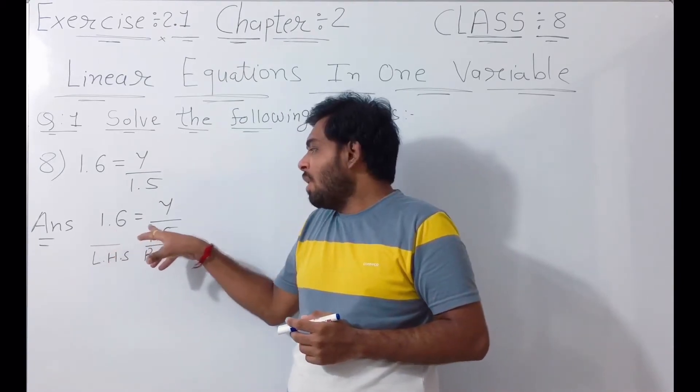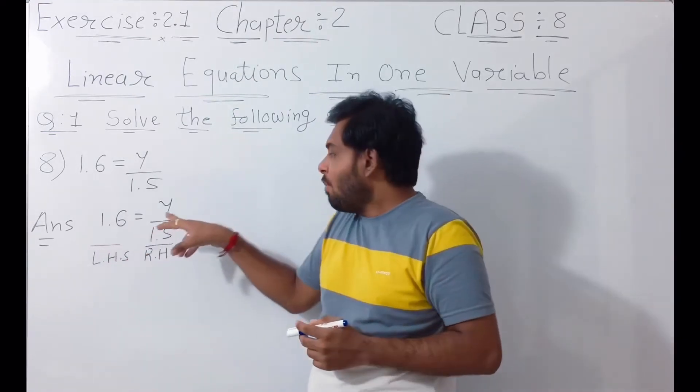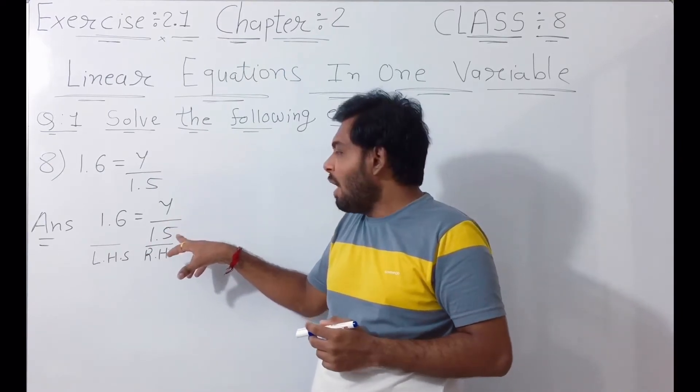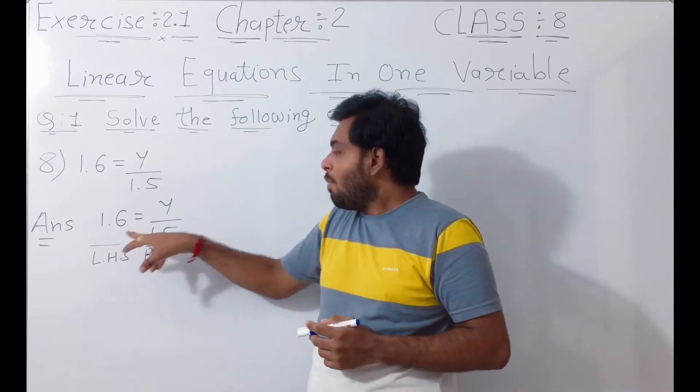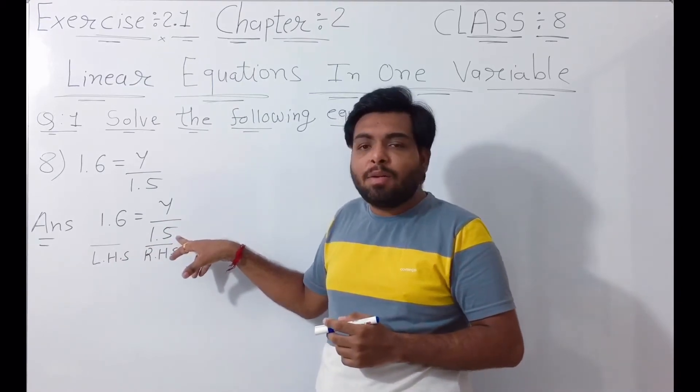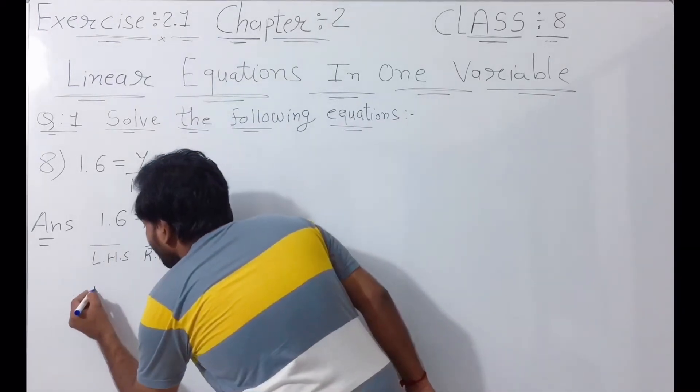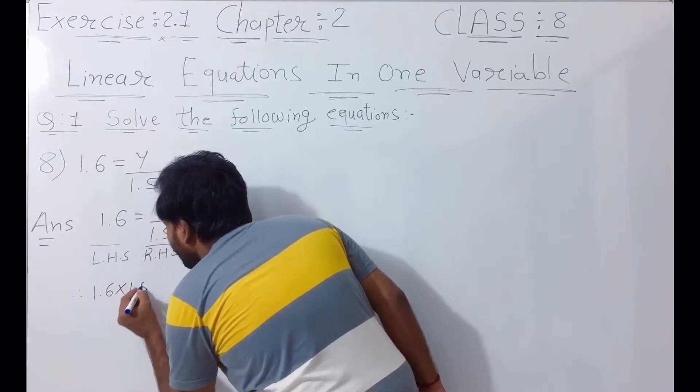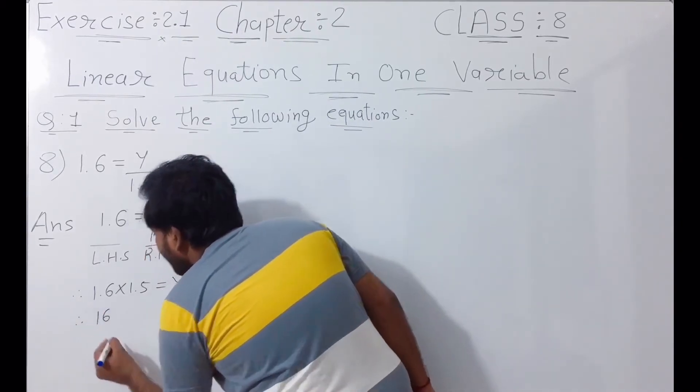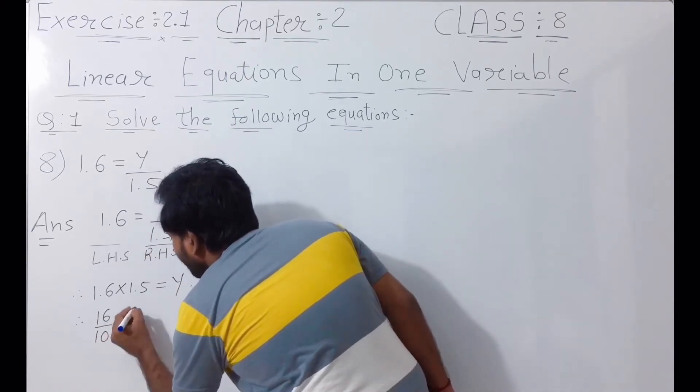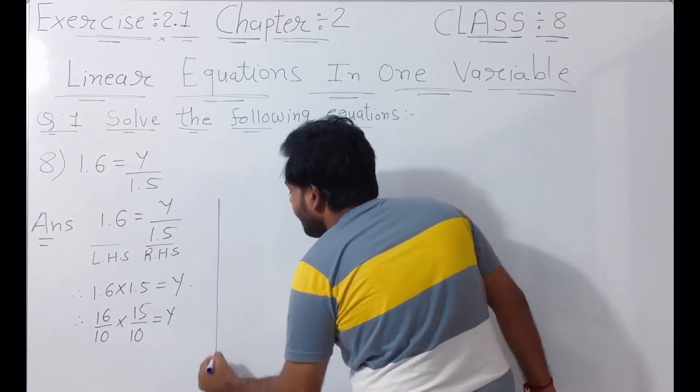Now we know that to solve for y, the left hand side value is 1.6 and on the right we have y divided by 1.5. So here we write 1.6 into 1.5 is equal to y. Then we convert into the fraction: 16 upon 10 and here 1.5, then 15 upon 10 is equal to y.